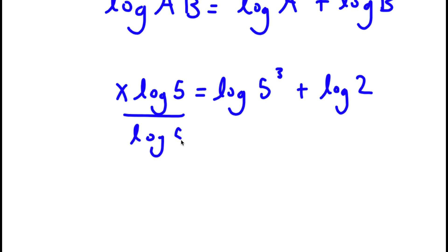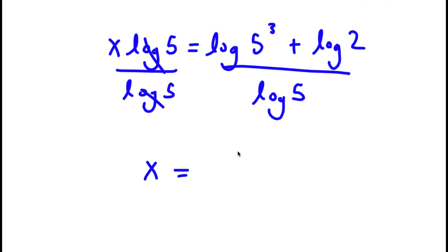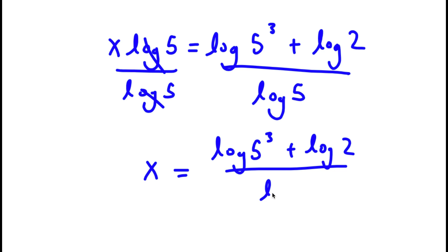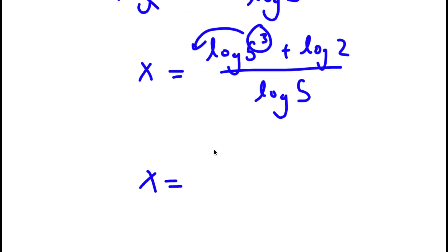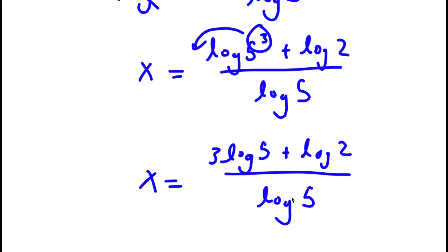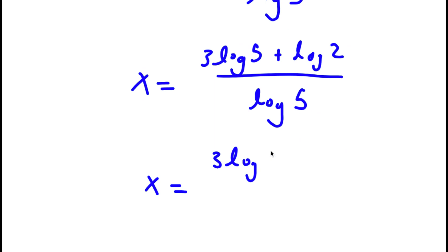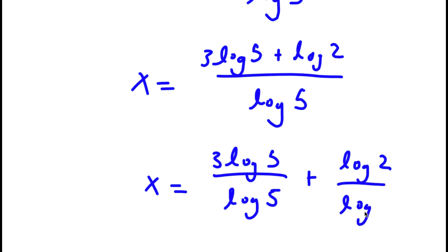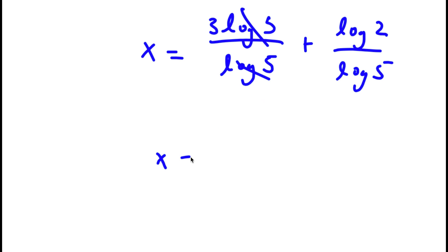Now I'm going to divide both sides by log 5. These two cancel out. I'll be left with x is equal to log 5 to the power of 3 plus log 2 over log 5. The 3 I can move to the front. So now I have x is equal to 3 times log 5 plus log 2 over log 5. I can rewrite this as 3 log 5 over log 5 plus log 2 over log 5. These two log 5s cancel out, so I'll be left with 3 plus log 2 over log 5.